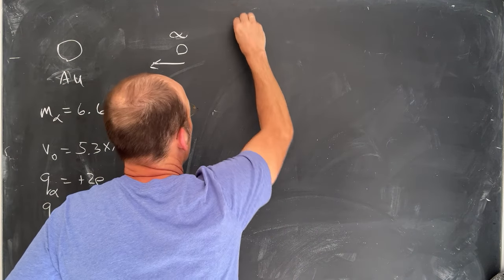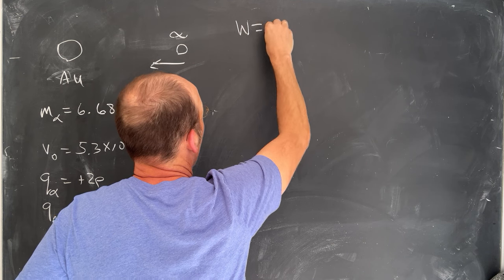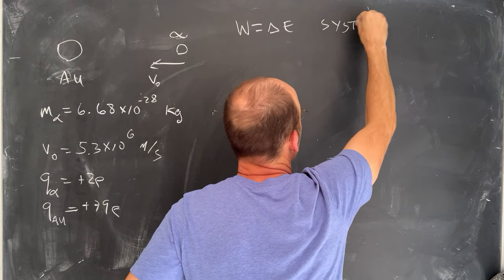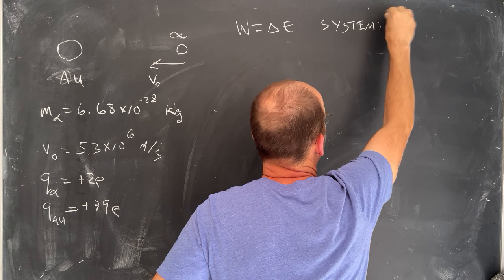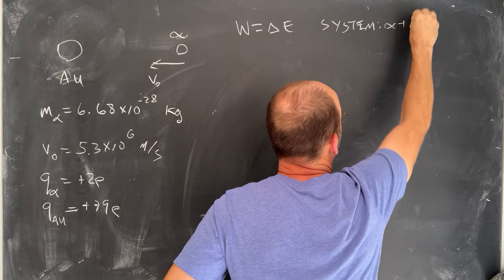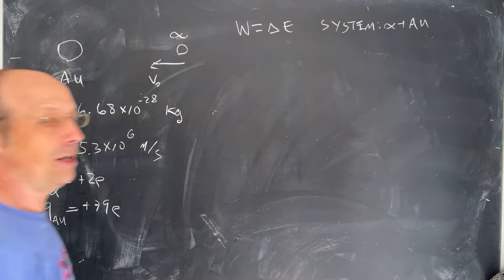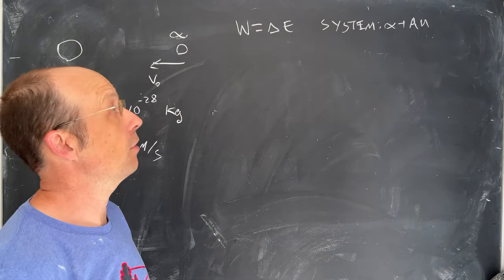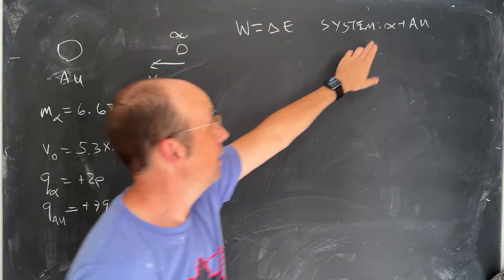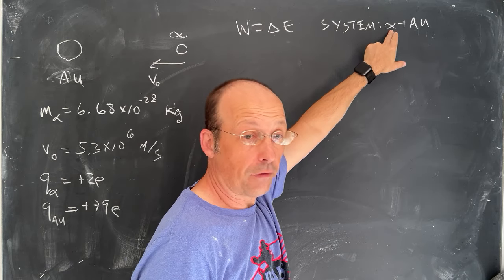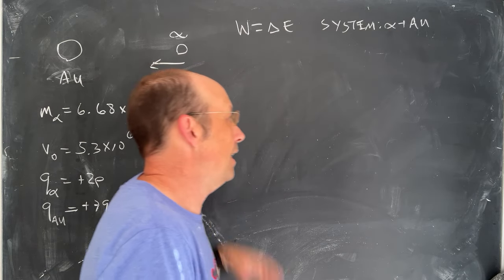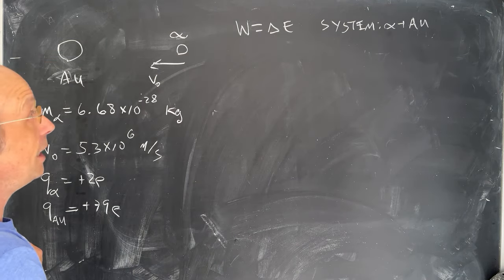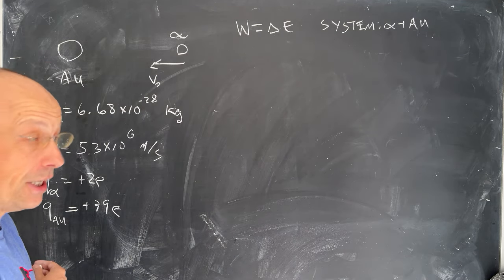And of course we want to use the work energy principle. Work is the change in energy and we need to define our system which is going to be the alpha particle plus the gold. So gold—I write AU for gold. In case you haven't seen on the periodic table, gold is AU. This is the Greek letter alpha and we represent that for the alpha particle. So we get to learn Greek letters, bonus.